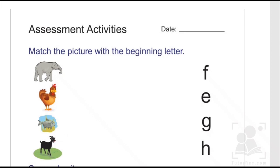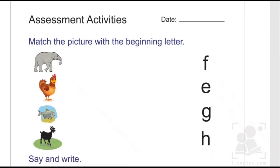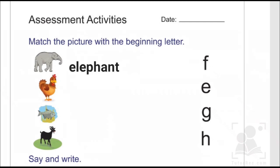Let's start with the first picture. As you can see, the first picture is of an elephant. The word 'elephant' starts with the letter E, therefore we are going to match this picture with its respective letter E.